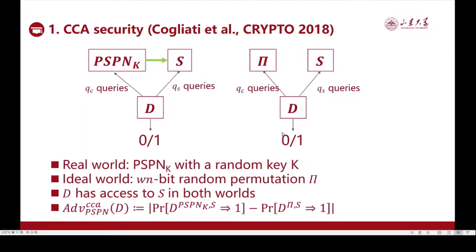We first recall the setting for CCA security. In this setting, a distinguisher has two oracles. The right oracle is the underlying S-boxes, modeled as public random permutations. In the real world, the left oracle is the partial SP network using a random key. In the ideal world, the left oracle is a WN-bit wide random permutation. The distinguisher has to tell about the two worlds, and its advantage is defined in this expression.